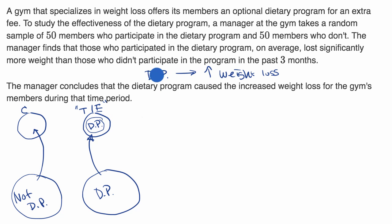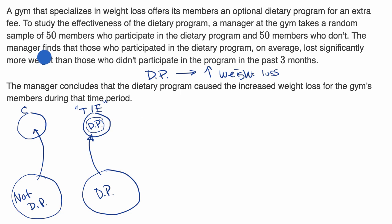Because of self-selection, you can't make a causal connection. People who chose the dietary program may have been more motivated to lose weight, or wealthier — and that wealth is associated with being able to eat better and lose more weight. A conclusion the manager might be able to make is that there is an association between participating in the dietary program and weight loss, but causality cannot be established.